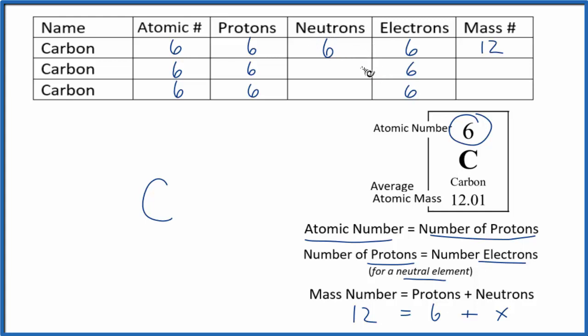Some of them actually have a mass number of 13. And if they have 13, something plus six equals 13. Seven plus six, that'll give us 13. So some of the carbon atoms in the sample, about 1%, will have seven neutrons and therefore have a mass number of 13.